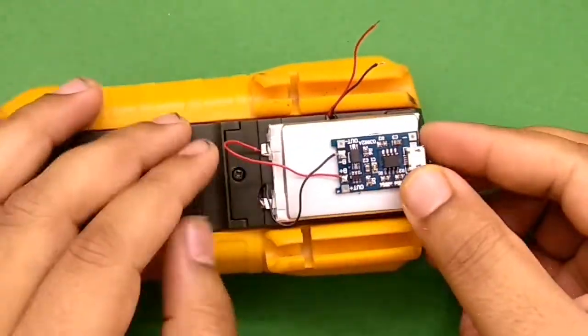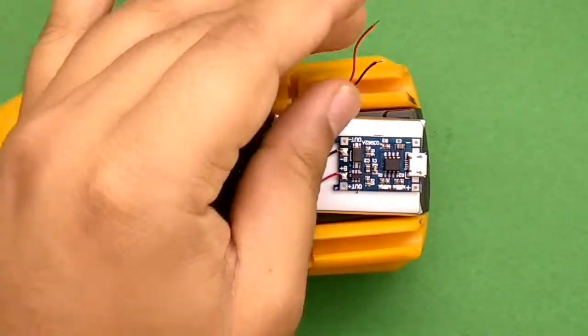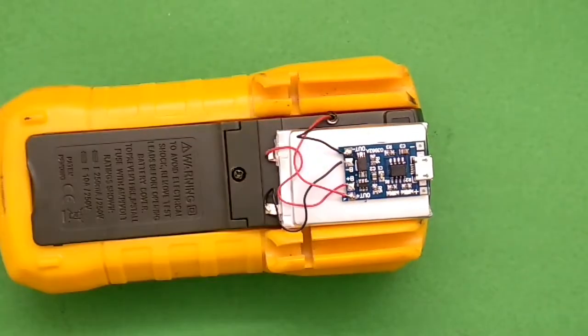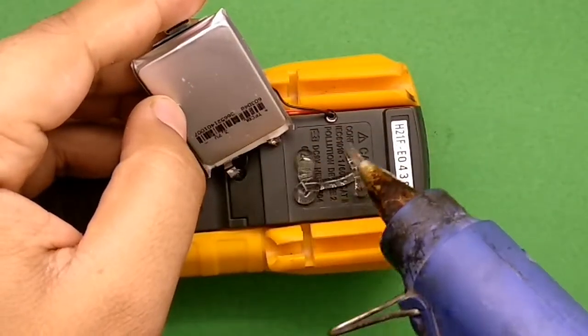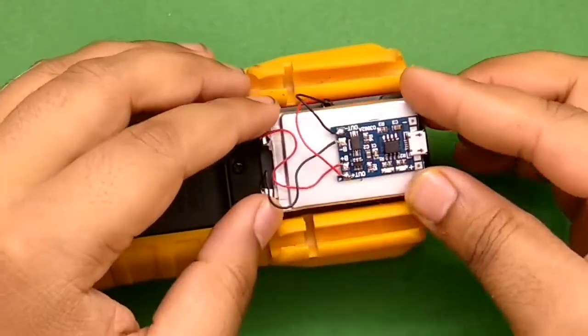Tighten the screws. Stick the battery on its place. Solder the wires. Using hot glue gun we're gonna place the battery properly.